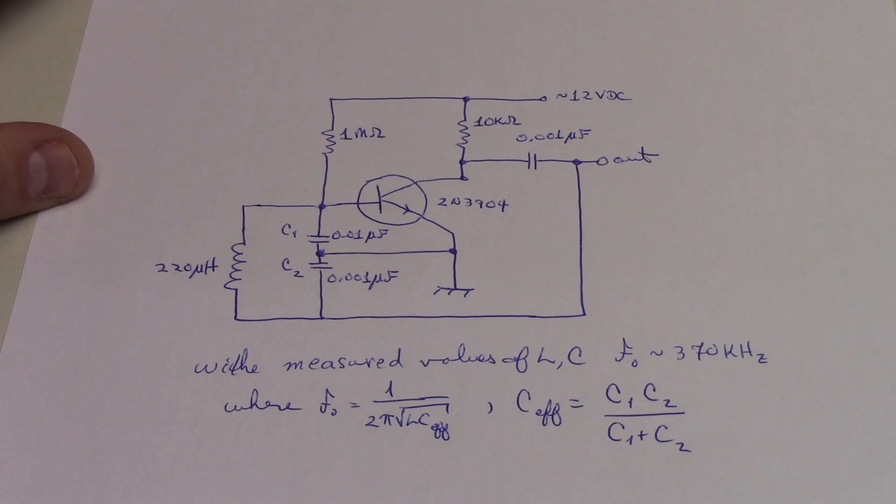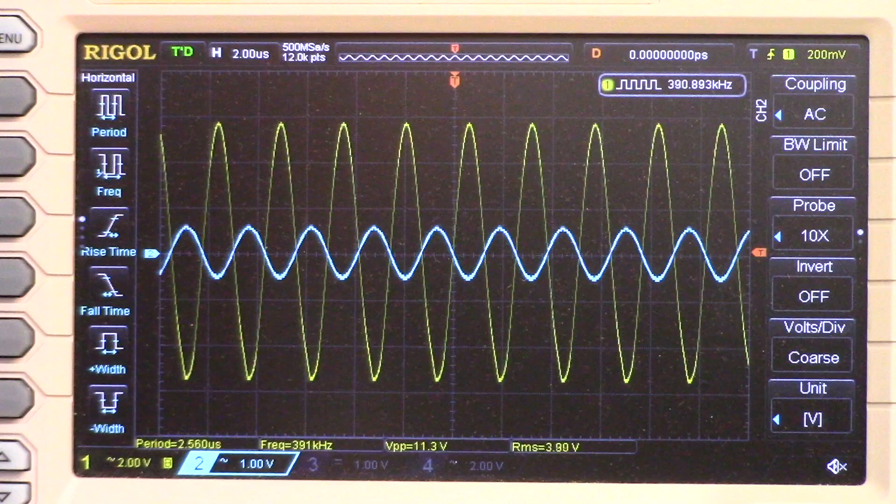Well, it's not difficult to breadboard this sort of thing up. And that's what we'll show in just a moment. And I'll just point out now that because these are in series, you have to write an effective capacitance, which is of course just the product over the sum. When you go through and you actually put in the measured value of these different elements, we should expect to get a resonant frequency of somewhere around 370 kHz.